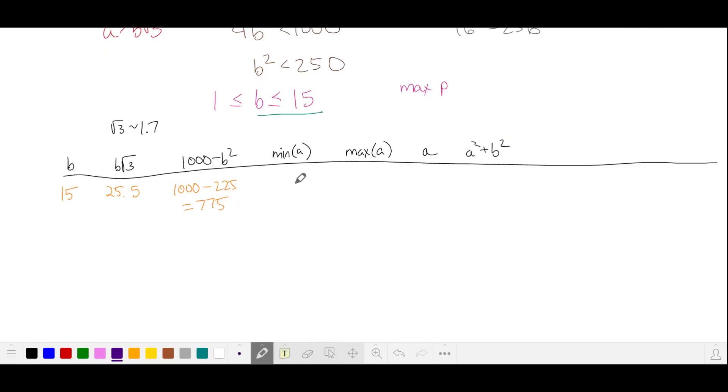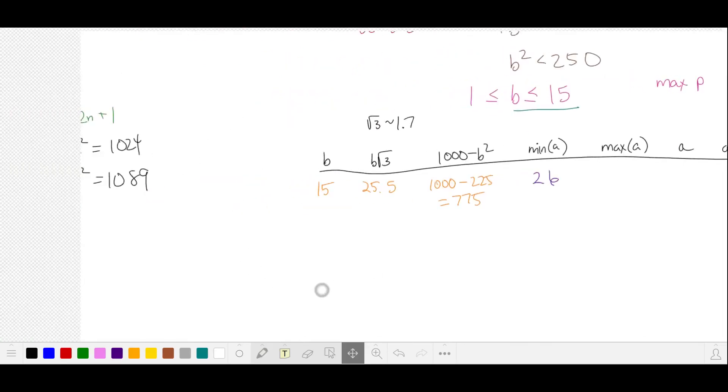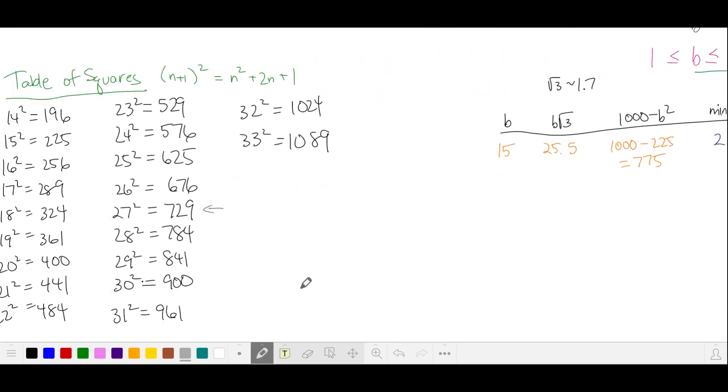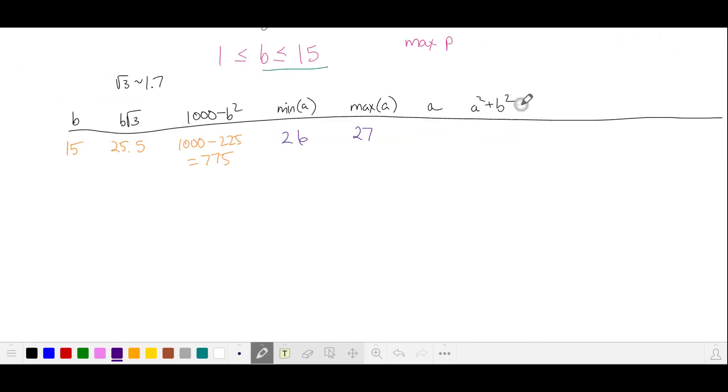Since a is a positive integer, our minimum value of a is 26. Comparing 775 to our list of perfect squares, we see that is just above 27 squared. So that's our maximum value of a. We're looking for a prime number that's the sum of the squares of a and b. Note that a and b can't have any factors in common, because when we square them and sum them, they'll have a common factor, and it won't be a prime number. So we're going to pick values of a that don't have a 3 and a 5 in them. We'll start with the largest values of a. We'll exclude 27 because it has a 3 in its prime factorization, and we'll go straight to 26.